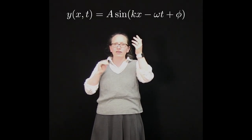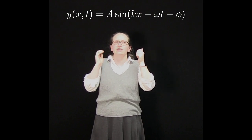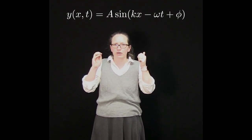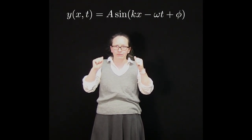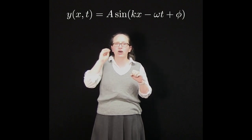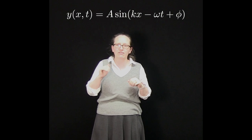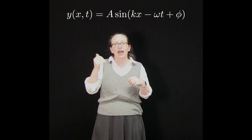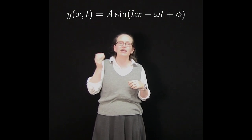The sinusoidal traveling wave equation can be written y(x,t) = A sin(kx - ωt + φ). In this equation, y represents the height of the wave at the position x and time t. So y is in meters.